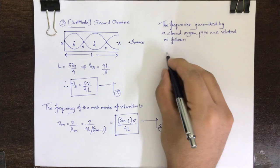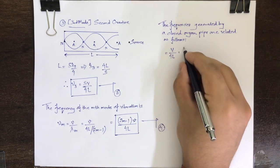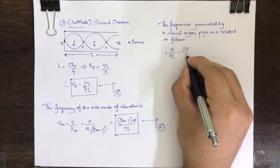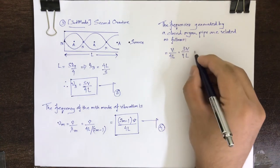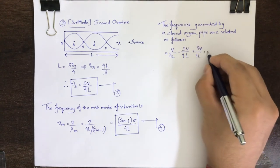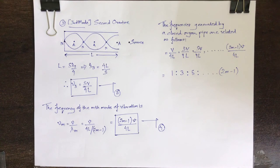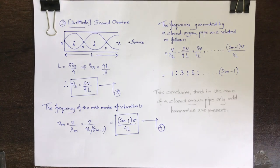From this calculation, it is clear that the frequencies generated by a closed organ pipe are related as follows: V upon 4L, that is the fundamental frequency; 3V upon 4L, that is the first overtone; 5V upon 4L, that is the second overtone; and 2M minus 1, times V upon 4L, which is the M-th mode. The overtones of the closed pipe have the following relationship: 1 is to 3 is to 5 till 2M minus 1. With this, it can be concluded that in the case of a closed organ pipe, only odd harmonics are present.